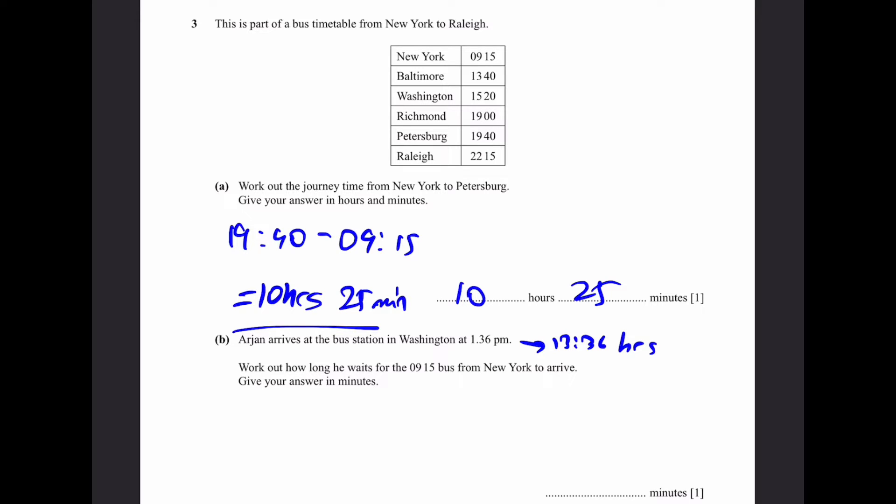Now the bus from New York arrives at Washington at 3:20 PM or 15:20 hours. So he waits 15:20 minus 13:36, and doing this correctly we get 1 hour 44 minutes. But then we also need to realize that it says in the question to give your answer in minutes. Therefore we convert this 1 hour to 60 minutes, add 44 to get 104 minutes. That's the answer.